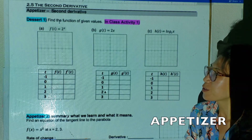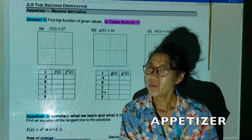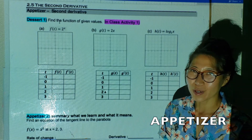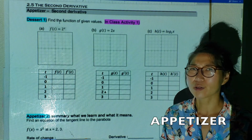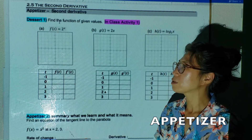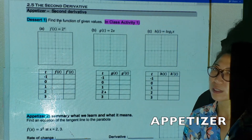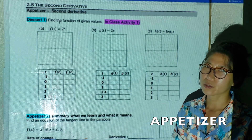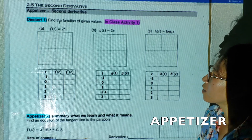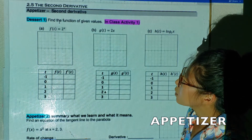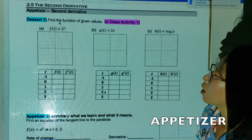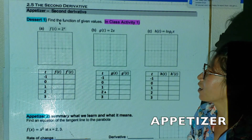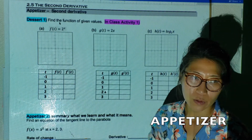Welcome class. We are on section 2.5 and almost done with chapter 2. I talked a lot in the previous section because if you understand that one, the next two sections will be easier. Pay attention to the explanations. I'm going to repeat again — I called this one a dessert but I'm going to change it to an appetizer.